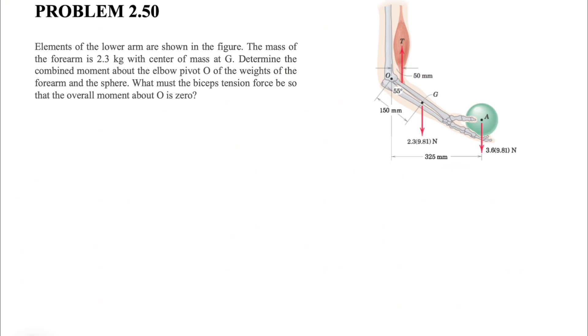We have elements of the lower arm as shown in the figure. The mass of the forearm is 2.3 kilograms and we can see the center of gravity for the forearm at point G. We need to determine the combined moment about the elbow pivot O of two different forces: first, the weight of the forearm, and second, the sphere that we can see in the figure.